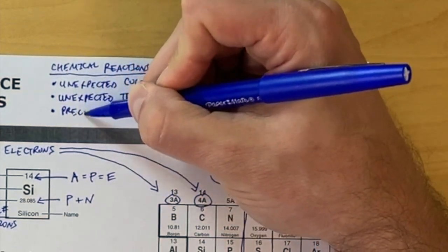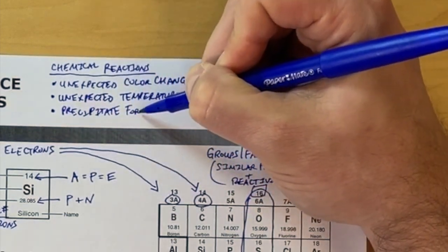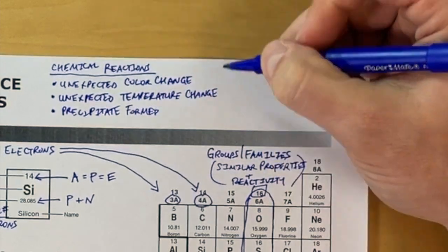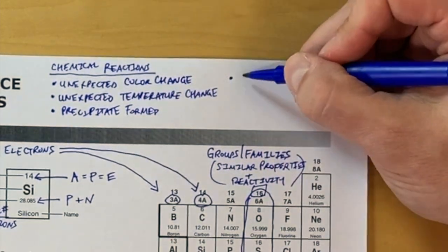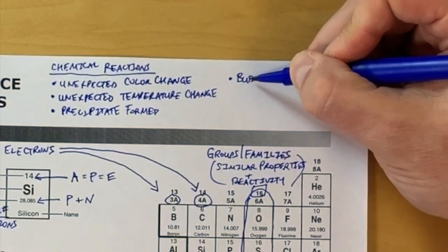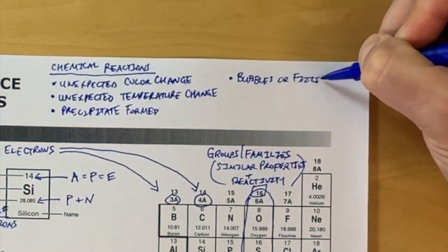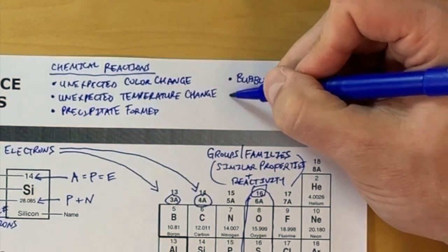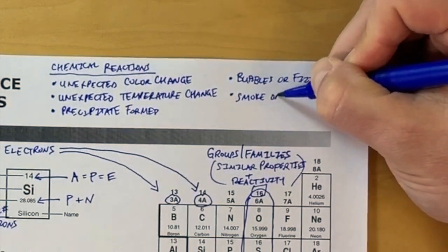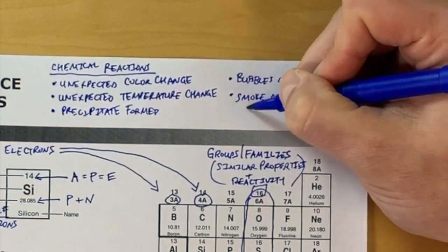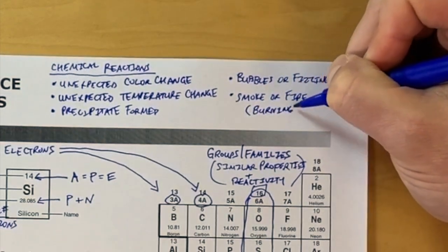The third one we're going to talk about is a precipitate. If you've mixed two liquid solutions together and a solid forms within the liquid, either suspended or at the bottom, that is evidence of a chemical reaction. Fourth, bubbles or fizzing. If a gas is being produced, that is a piece of evidence for a chemical reaction. And lastly, if you have smoke, fire, or burning, you can assume that a chemical reaction or chemical change has taken place.